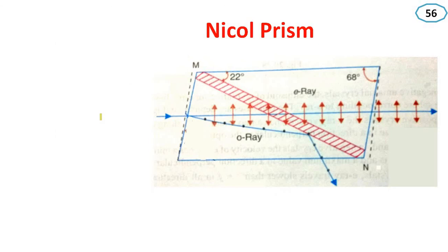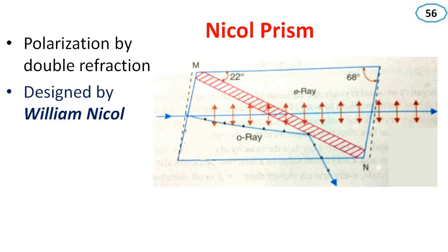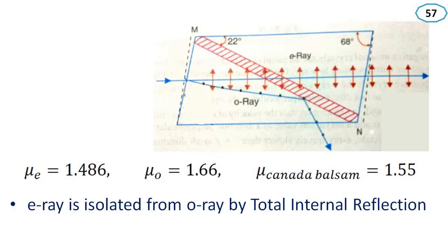Next topic: the Nicol prism. It works based on the principle of polarization by double refraction. It was designed by William Nicol, and hence the name. As seen in the diagram, two parts of a calcite crystal are joined together with a material called Canada balsam. The refractive index of the ERA is mu-E equal to 1.486, mu-O equals 1.66, and the refractive index of Canada balsam equals 1.55. This means the refractive index of Canada balsam is greater than that for the ERA but less than that of the ORA.